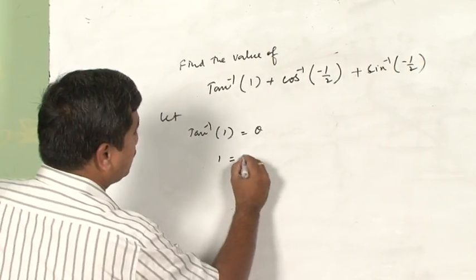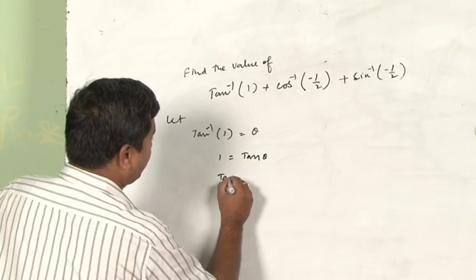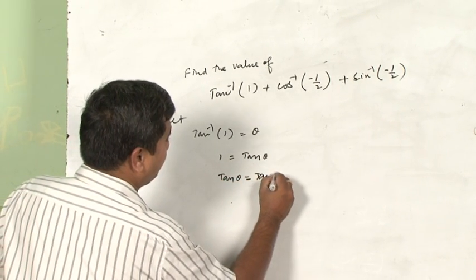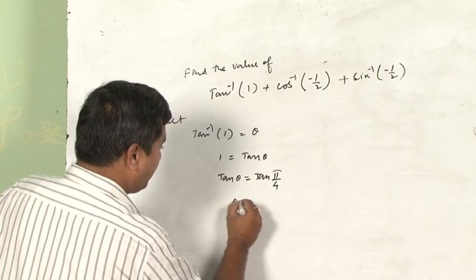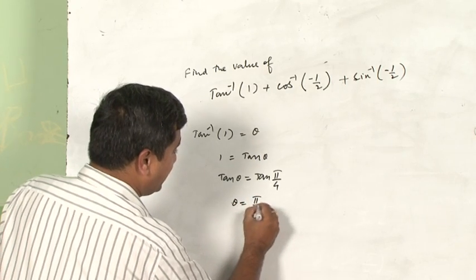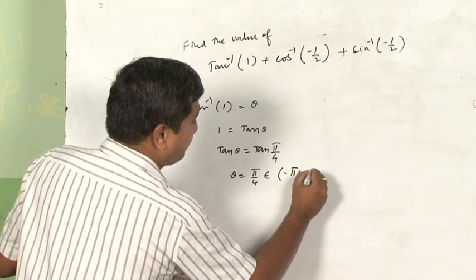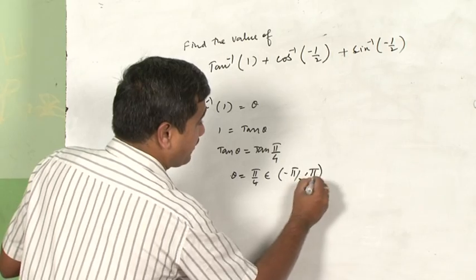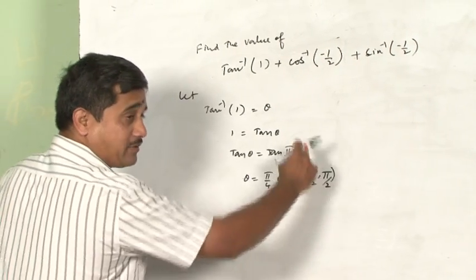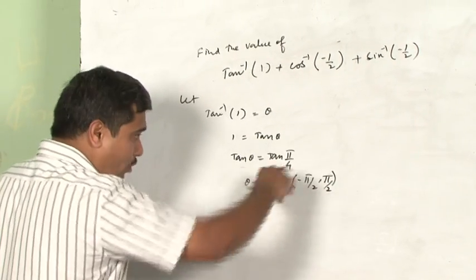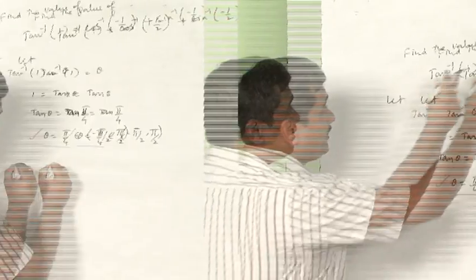We have tan θ = 1, so tan θ = tan(π/4). The value π/4 falls well within the principal value branch of tan inverse, which is the open interval (-π/2, +π/2). So we have our first value: θ = π/4.